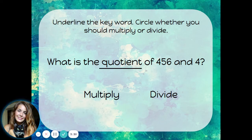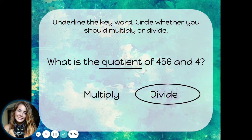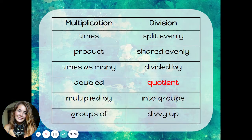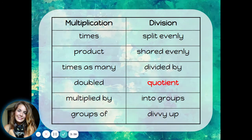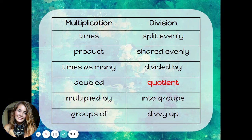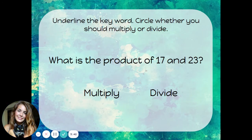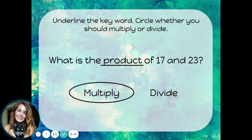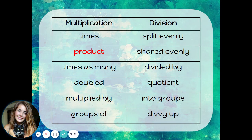What is the quotient of 456 and 4? Quotient is a division word — the quotient is actually what you call the answer to a division problem. What is the product of 17 and 23? Product means multiply. A product is actually the answer to a multiplication problem.